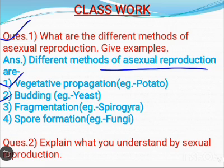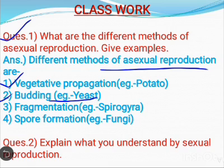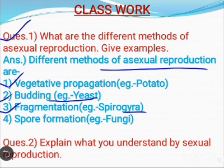The second method of asexual reproduction is budding, which involves the formation of new individuals from bulb-like projections known as buds. The example is yeast. The third type of asexual reproduction is fragmentation. The most common example of this type of reproduction is Spirogyra algae. In this type of asexual reproduction, new organisms are formed from the fragment of the parent body.